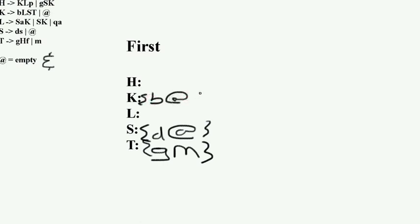Now let's jump to L. L has everything that S has, which is d. Now since S contains an empty, L will also have a — the S goes away because S contains empty, so we put a down as well. That's a terminal, so we can't touch it. Then we have K, and we have q which is a terminal.